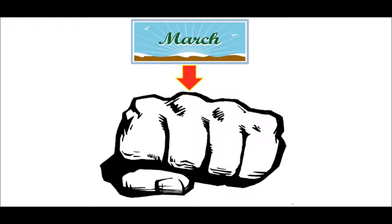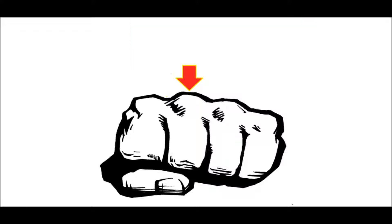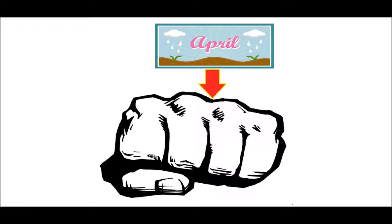Now we move over to the next knuckle, which is March, and this is 31 days. And again, the next one we move down into the valley, which is 30 days or less. So here we have April, which is 30 days.